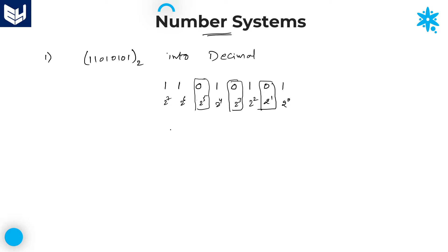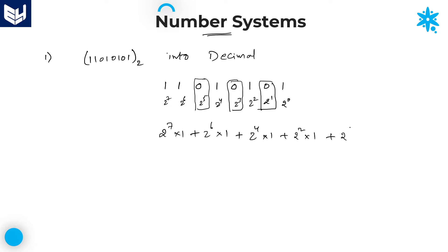Let us take the first value: 2 power 7 into 1, plus 2 power 6 into 1. 2 power 5 is not required — anything into 0 becomes 0. Then 2 power 4 into 1, next 2 power 2 into 1, and at last 2 power 0 into 1.